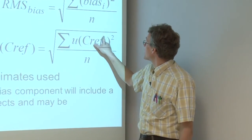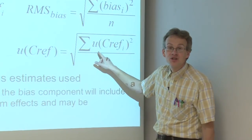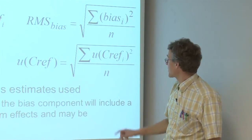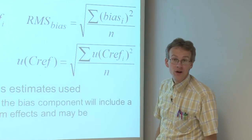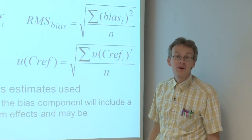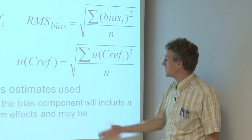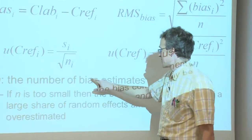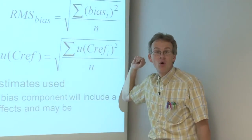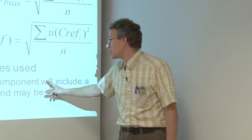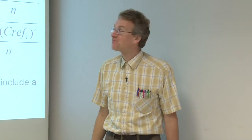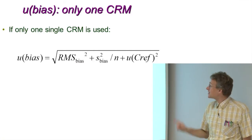Finally, the UC_ref_i values are averaged in exactly the same way as the bias values — by the root mean square procedure: all values are separately squared, the squares are summed and divided by the number of UC_ref estimates you have, giving the average uncertainty of the reference value. Let me once more stress that if the number of bias estimates is too small — if n is too small — then the bias estimate will include a large share of random effects, and the bias can be overestimated.